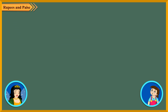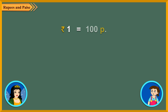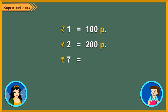Can we convert Rupees into Paise or Paise into Rupees? Of course, Neha. We can always convert Rupees into Paise and Paise into Rupees. There are 100 Paise in a Rupee. So 2 Rupees is equal to 200 Paise, and 7 Rupees is equal to 700 Paise. So to convert Rupees into Paise, simply put two zeros on the right.